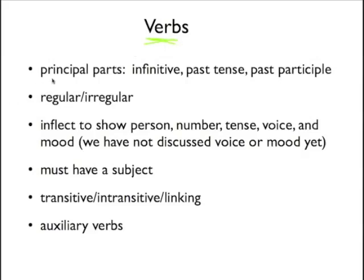Remember the principal parts, because that's going to come up again and again as we talk about verbs. The principal parts we've talked about so far are the infinitive, the past tense, and the past participle. Verbs are either regular or irregular — an irregular verb does not form its past tense and/or past participle by adding -ed. A regular verb adds -ed to the infinitive to form the past tense or past participle; an irregular verb does something else.